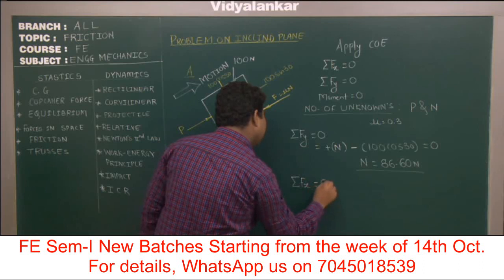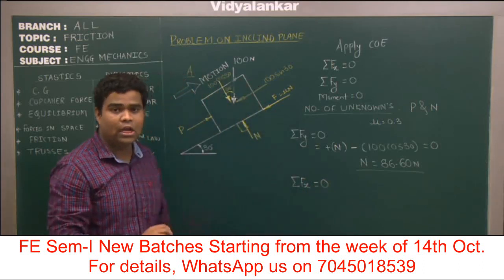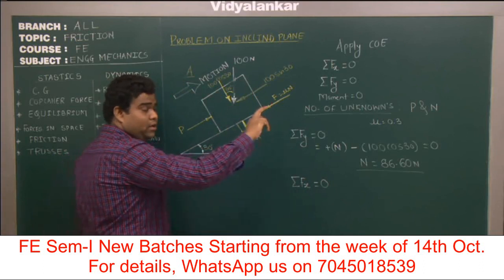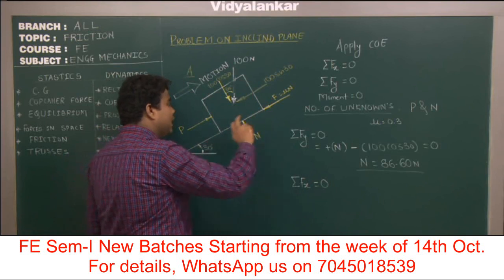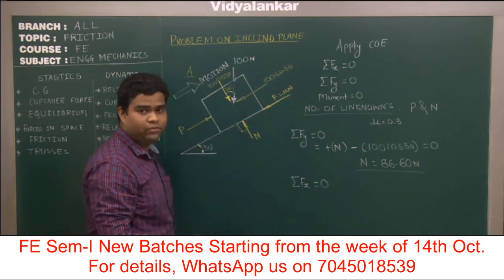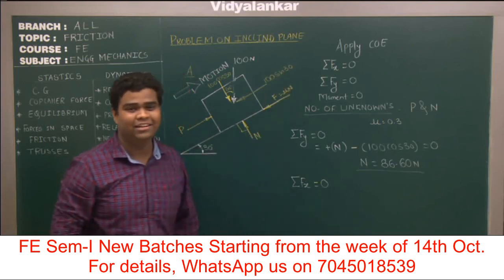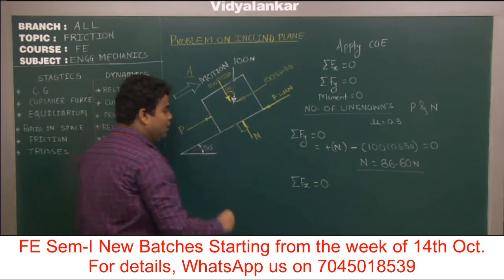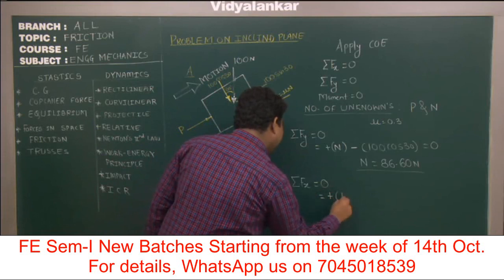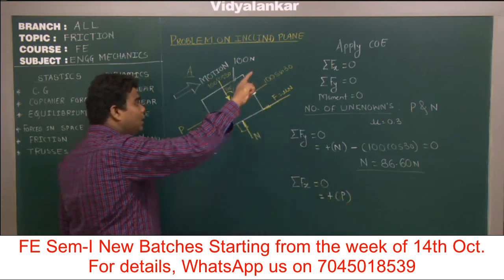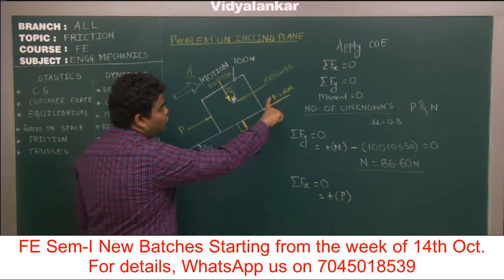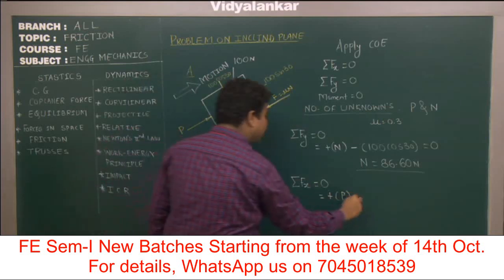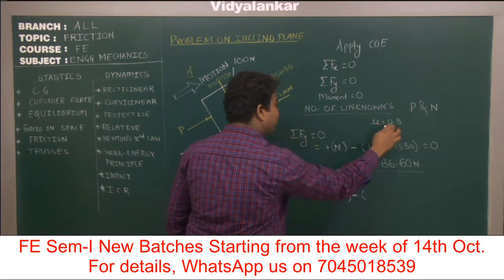Summation Fx stands for all forces along the x-axis — here along the inclined plane. Forces going up the plane are positive and forces coming down the plane are negative. Force P is going up the plane, so we write plus P. The frictional force μN comes down the plane, so we write minus μN, that is minus 0.3 into 86.60.